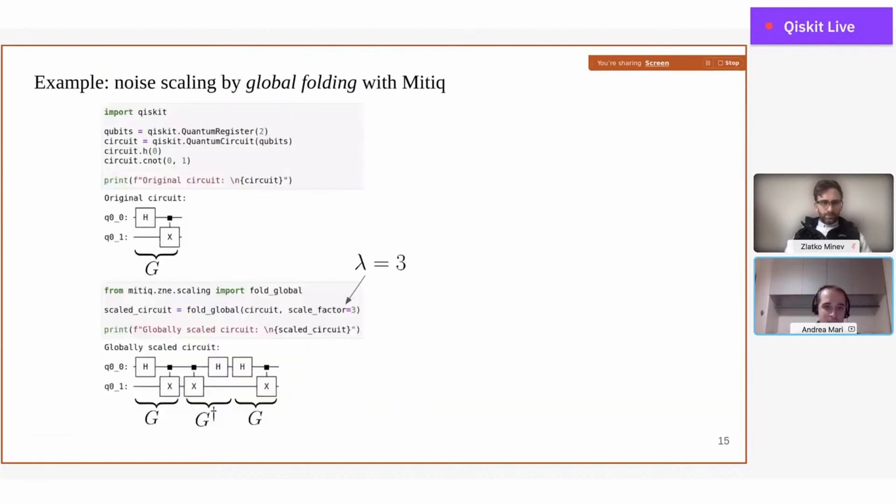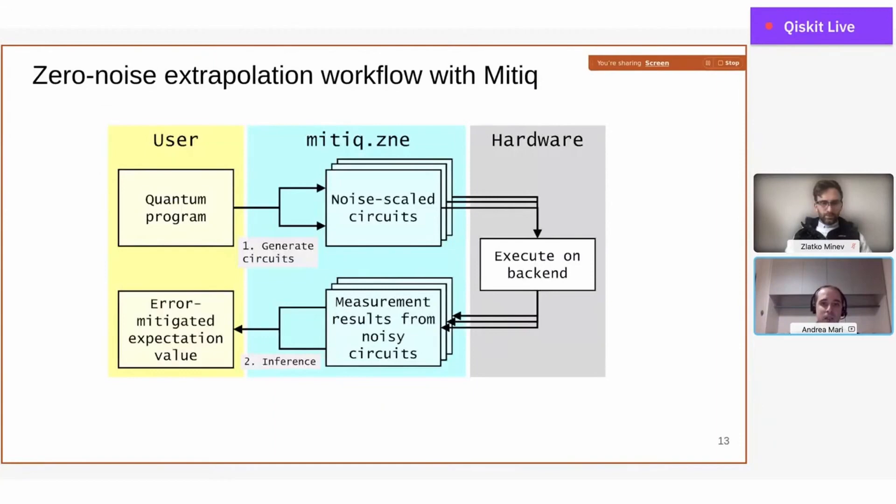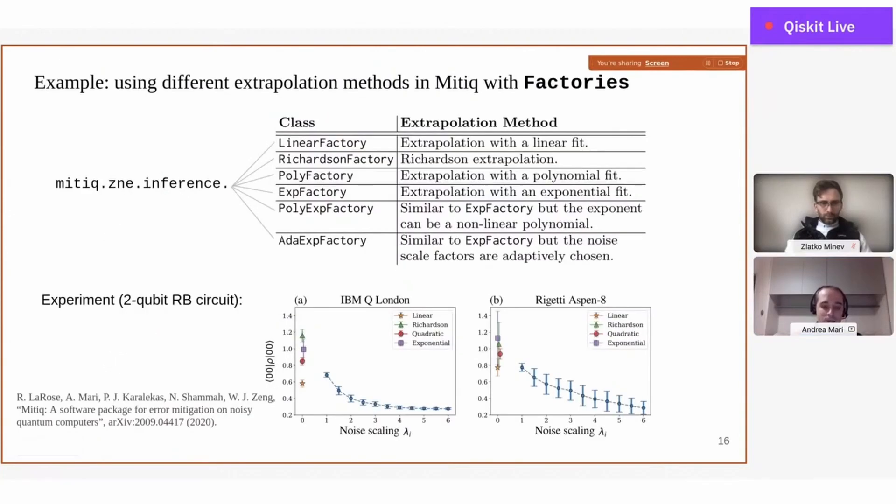Once you have this, you can apply the first part of zero-noise extrapolation. Then you execute all these circuits and we are back to the problem of inference: how can we extrapolate to the zero-noise limit? There are different methods to do this and some of them are built in Mitiq. For example, you can use linear extrapolation, Richardson extrapolation, polynomial, exponential, even adaptive algorithms.